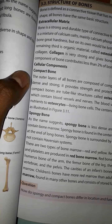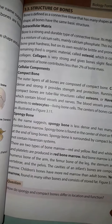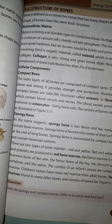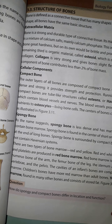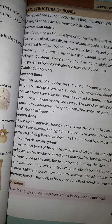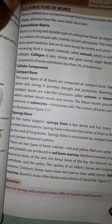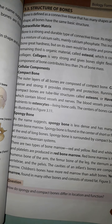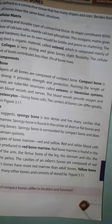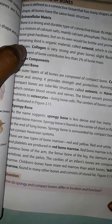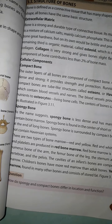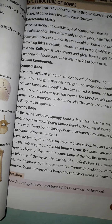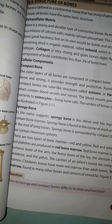The outer layers of all bones are composed of two structures. Osteocytes are living bone cells.